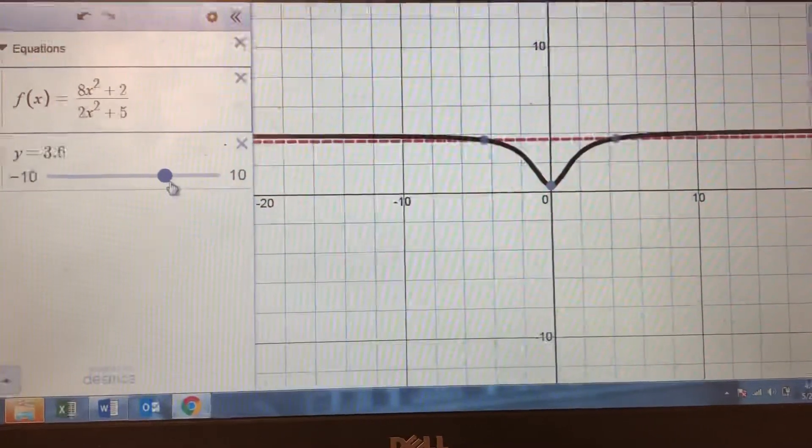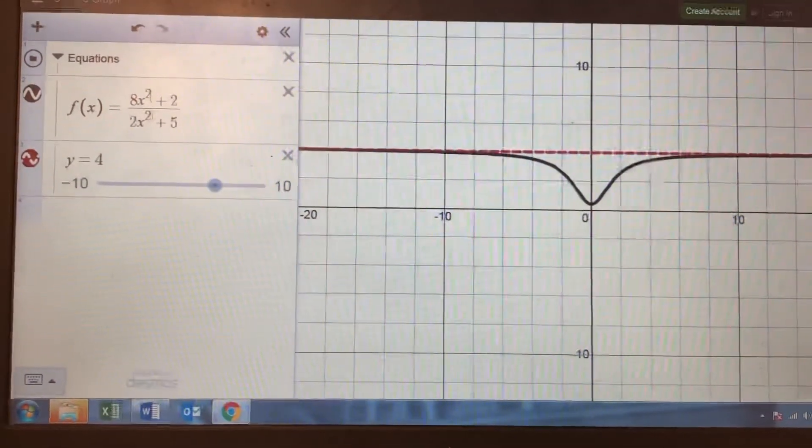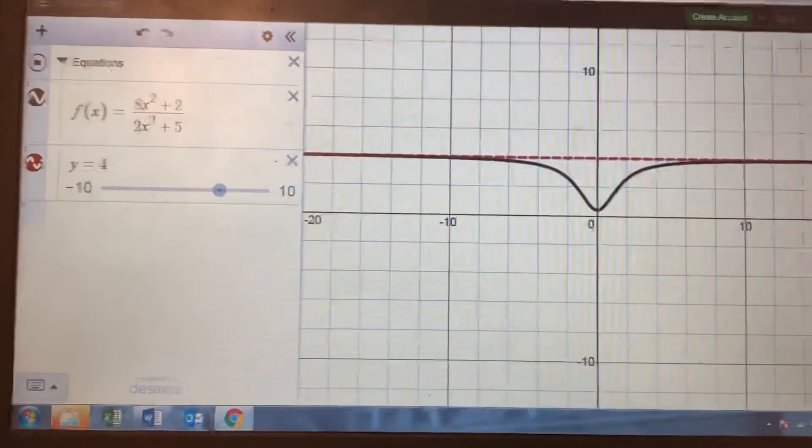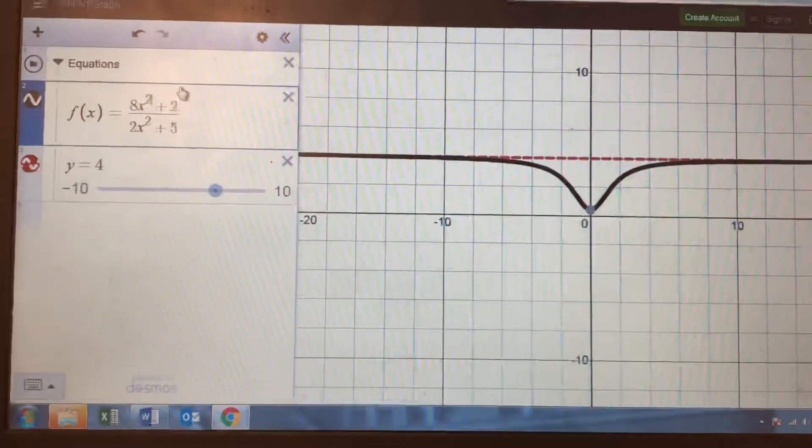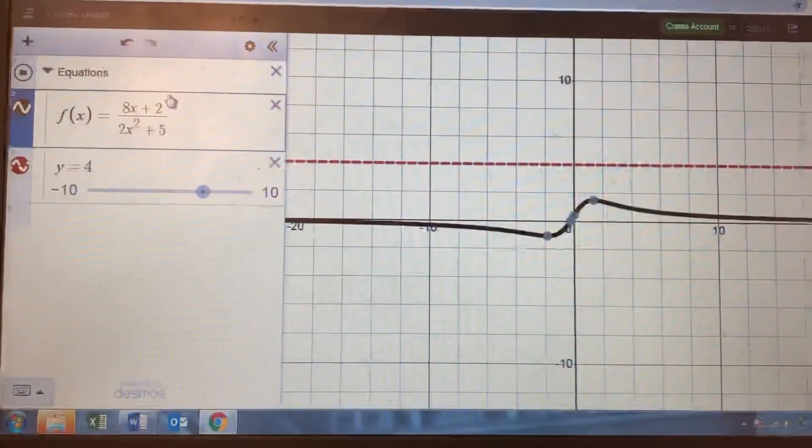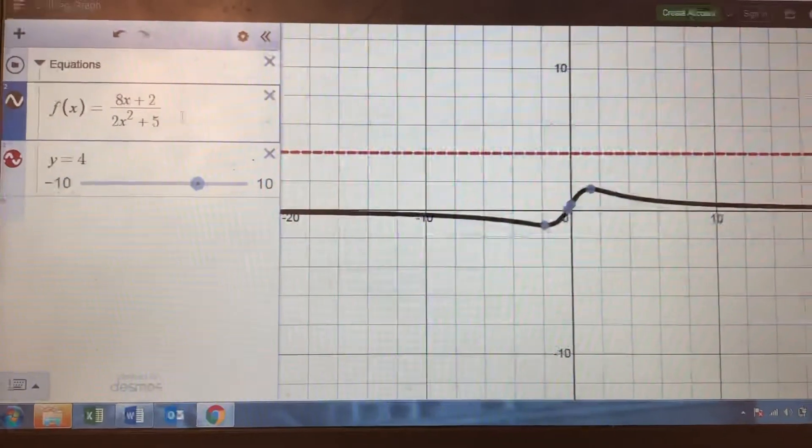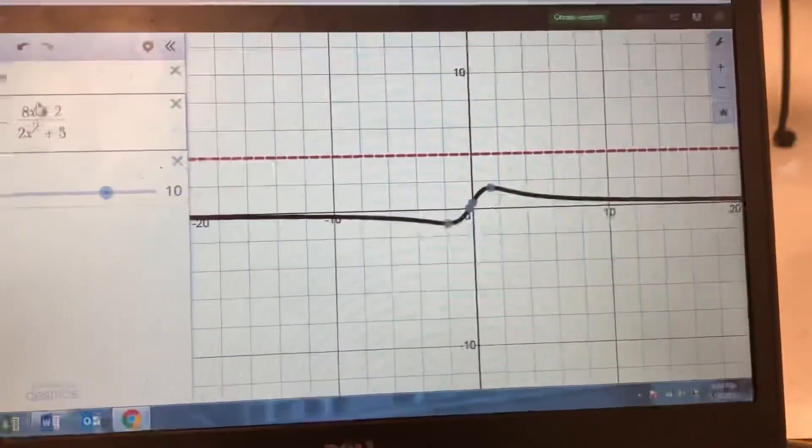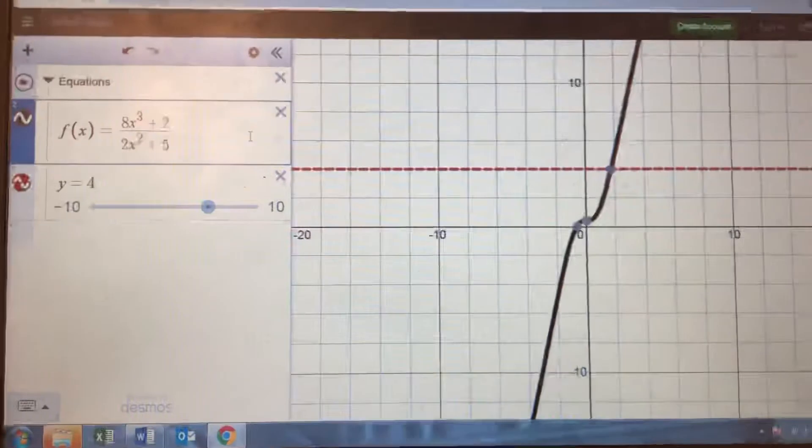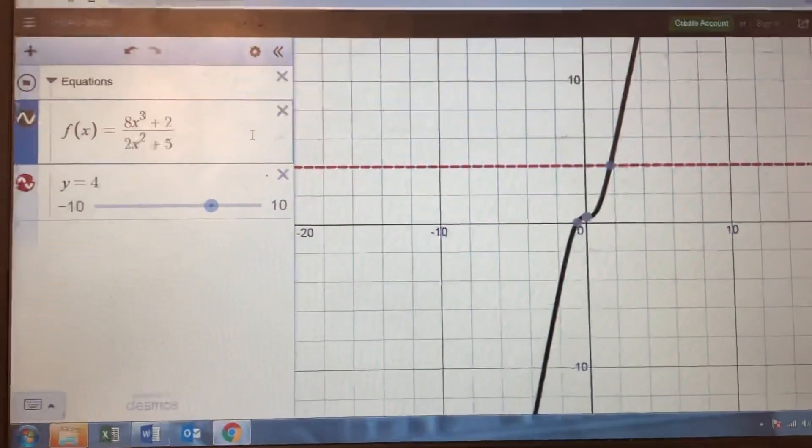So the story about horizontal asymptotes has to do with degrees and leading coefficients. I'm going to say it here, but in the next video I'll write it on the board and we'll do some examples. If the degree of the denominator and the degree of the numerator match, then the horizontal asymptote is y equals the ratio of leading coefficients, so 8 over 2. But if the degree on the bottom is bigger, the horizontal asymptote will always be y equals 0. If the degree on the top is bigger, there will be no horizontal asymptote. So it's a three case scenario depending upon where the larger degree is. In the next video I'll summarize it on the board and we'll work some quick examples because it's really easy.